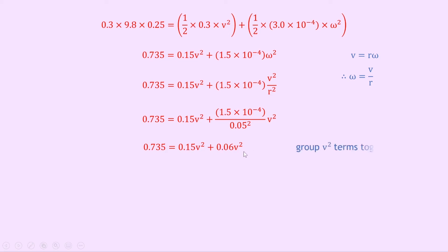Now you'll see quite clearly that we've got two expressions for v squared, so we can just group them together. And if we do that, we get 0.21v squared equals 0.735, and all I've done there is swap the sides.